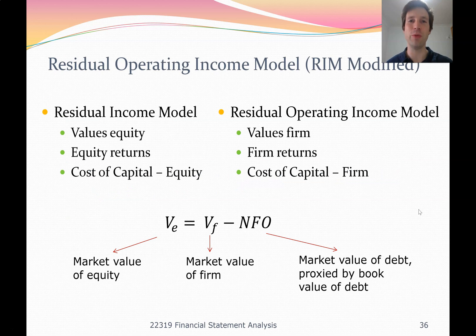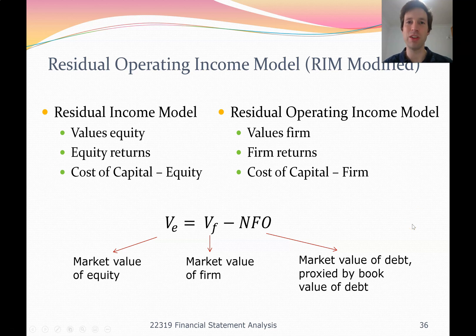There's obviously room for confusion between these two models. The Residual Income Model and the Residual Operating Income Model have very similar names — just one has the word 'operating' in it — and they operate in very similar ways. The formulas look very similar and the way we specify the model is very similar. The Residual Income Model values the firm's equity, so in the formula it started with V subscript E for valuing equity, and we used the cost of capital for equity, RE, in that model.